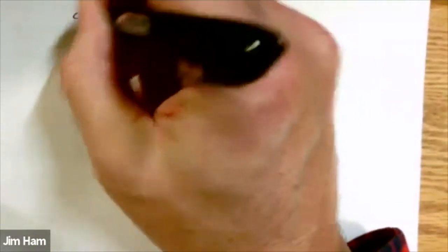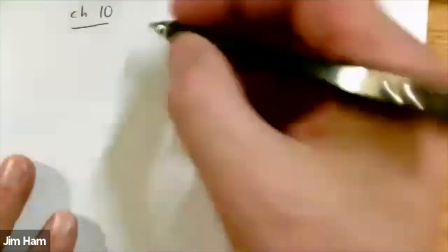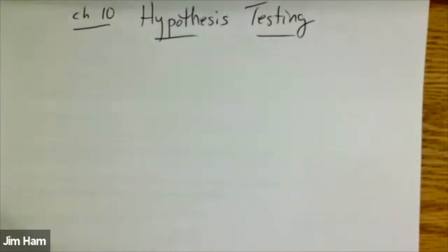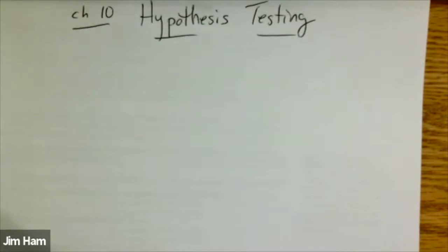We're going to get into chapter 10 today, and chapter 10 is about hypothesis testing. Someone is going to make a claim about a population mean or a population proportion. For example, someone could make the claim that Donald Trump is going to get 48% of the popular vote. The only way that we can confirm that claim is to go collect some data and see if our data conforms to the claim.